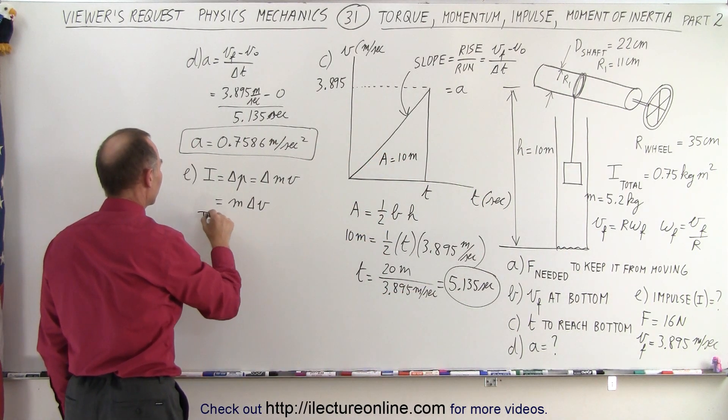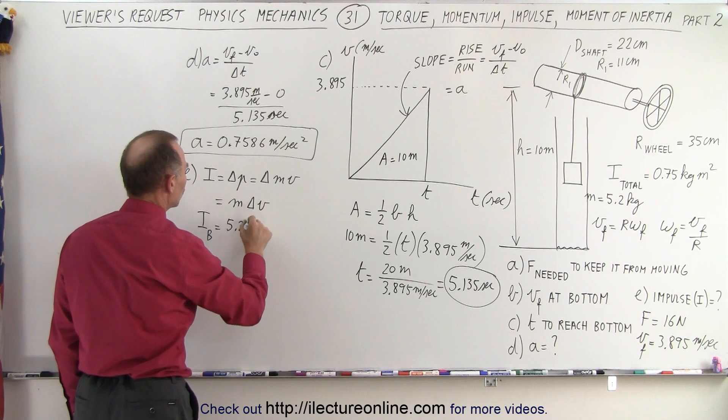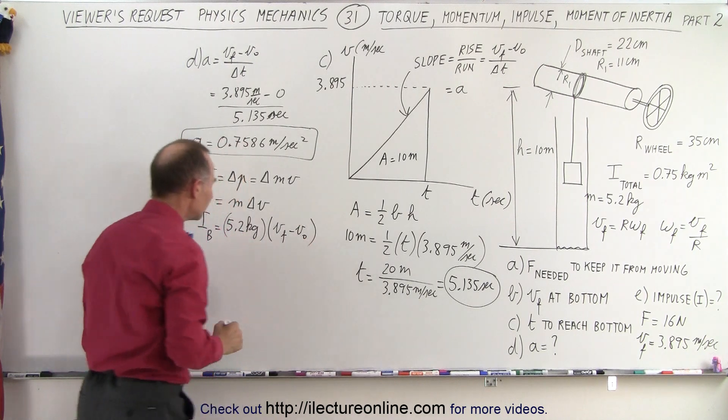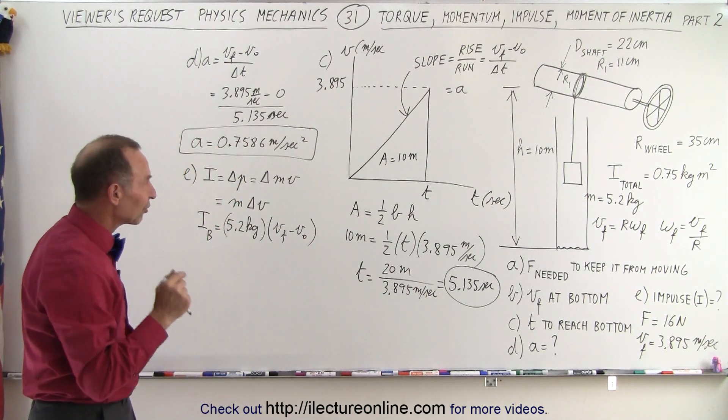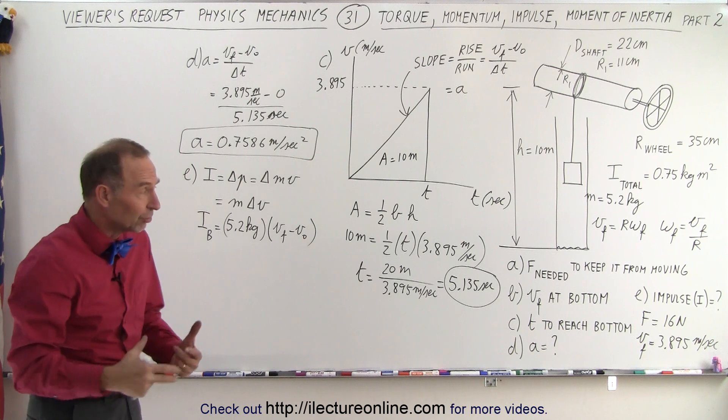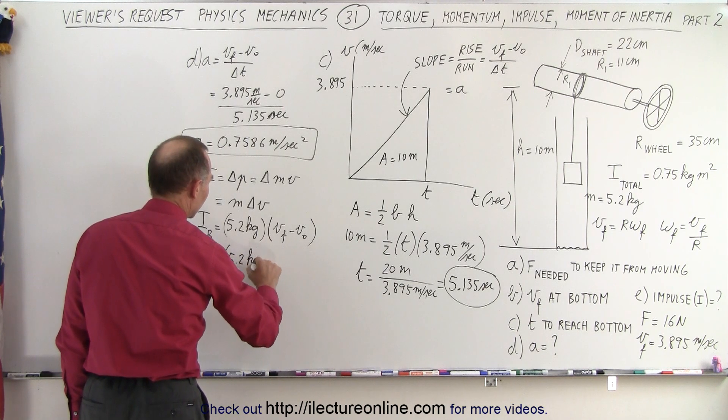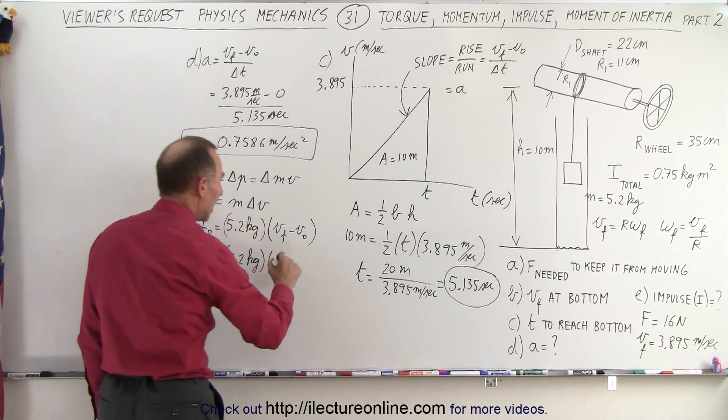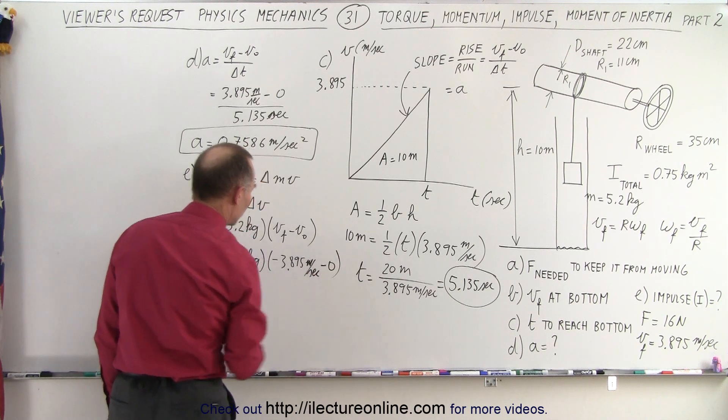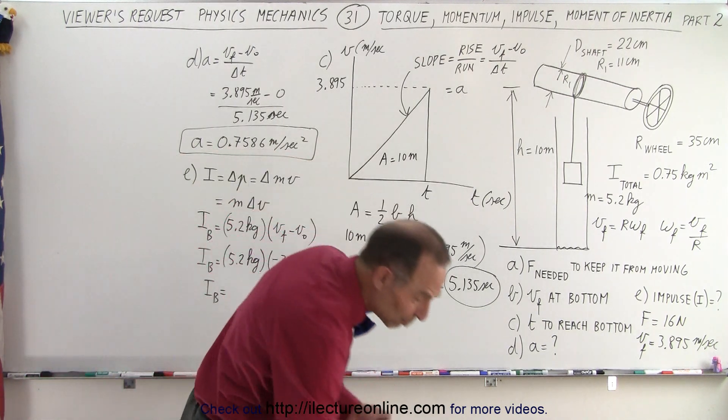So here we could say that the impulse on the bucket is equal to the mass of the bucket, which is equal to 5.2 kilograms times the change in velocity, which would be velocity final minus velocity initial. And notice impulse is indeed a vector quantity. Direction does matter if you want to think about it that way. So if you think about it, the negative direction is a negative impulse. And so we could say that IB is equal to 5.2 kilograms times the final velocity, which would be a minus 3.895 meters per second, minus 0 for the initial.